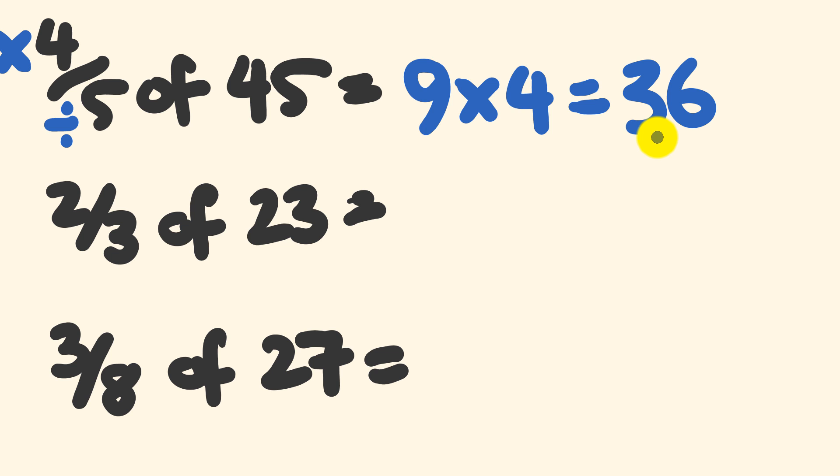Now the next one we have, 2 thirds of 23. Now look, 3 doesn't go into that very nicely. So what I'm going to do first is the multiplication part first. 23 times 2 is equal to 46, and then I'm going to divide by 3. 46 divided by 3? That's not too hard because 3 times 15 is 45, and we have 1 left over. That's 1 over this bottom number here, 1 third. Our answer, 15 and a third.